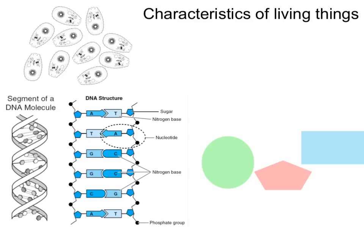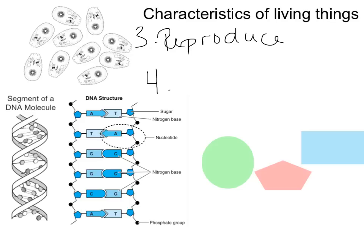All living things also need to have the ability to reproduce. All living things also must contain DNA — they have to have a set of instructions. Nobody said that set of instructions had to be in the nucleus; they just have to have one.